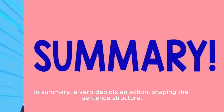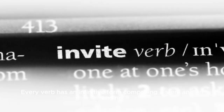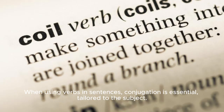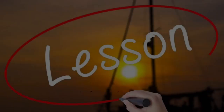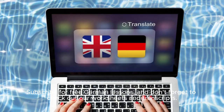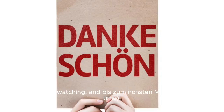In summary: a verb depicts an action, shaping the sentence structure. Every verb has an infinitive form comprising a stem and an ending. When using verbs in sentences, conjugation is essential, tailored to the subject. German verbs can be regular or irregular, each requiring a distinct conjugation approach. We hope you enjoyed this lesson. Subscribe for free German lessons, and don't forget to check out our worksheets and transcripts. Danke for watching, and bis zum nächsten Mal — until next time.